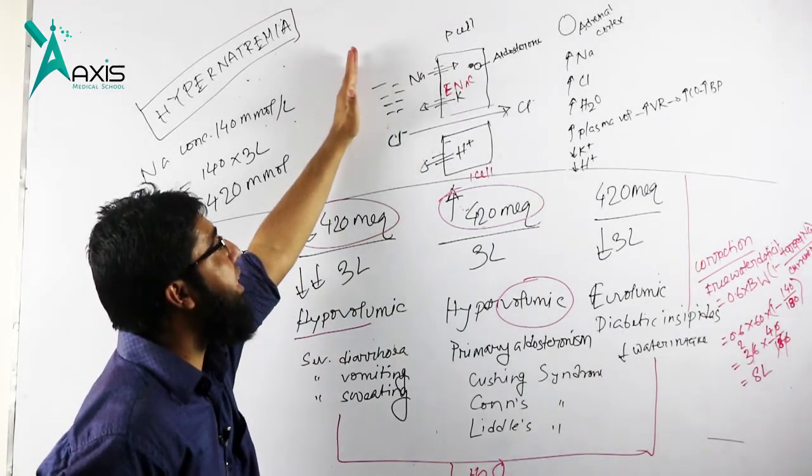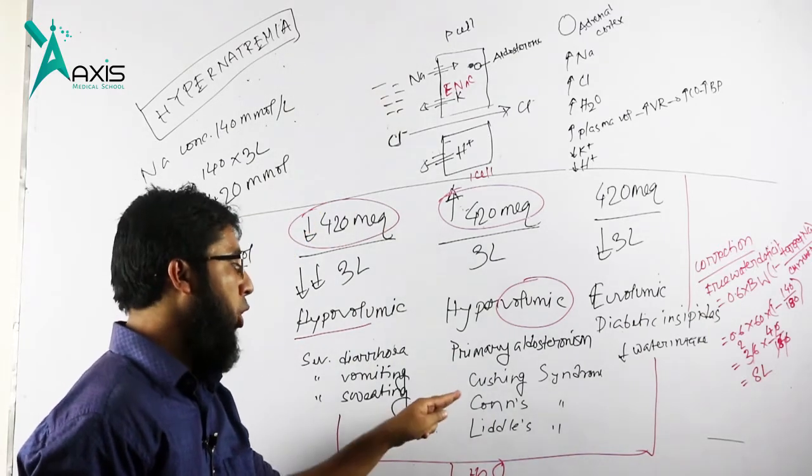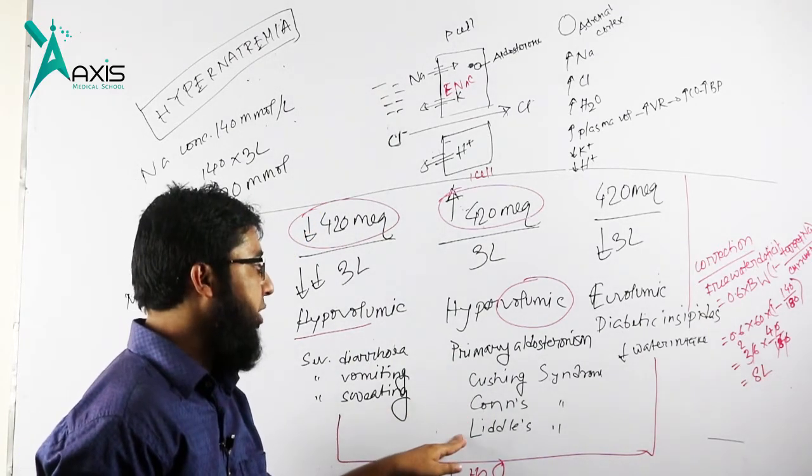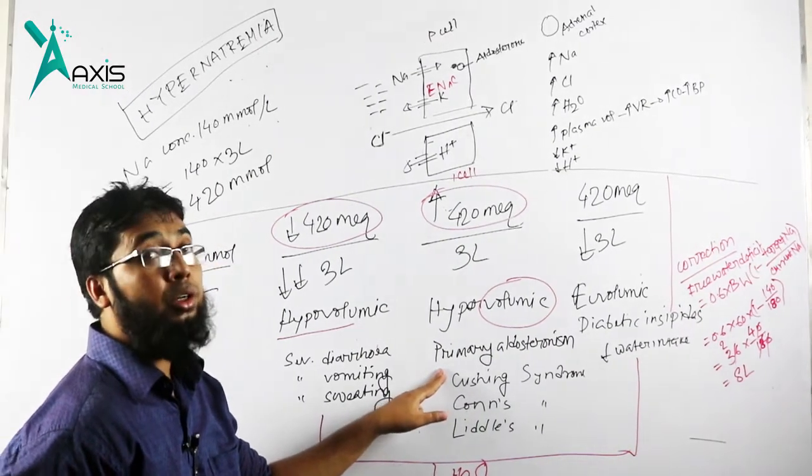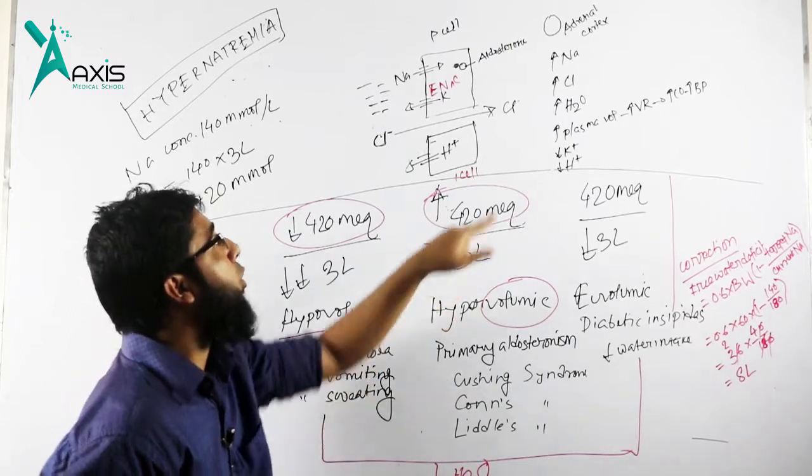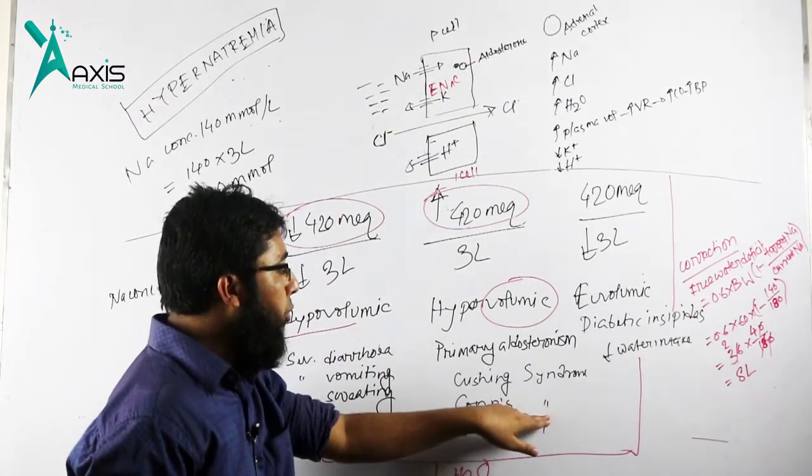What are the conditions where renin angiotensin is overactivated? We know Cushing syndrome, Conn syndrome, and Liddle syndrome. In Cushing syndrome, there is exaggerated action of glucocorticoid which acts on the mineralocorticoid receptor.